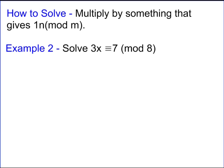So we want to solve these. We want to multiply so that we get 1n mod n. So, I need this over here to be 1 mod 8. So, I think about the coefficient, which is 3, and I think, what do I need to multiply 3 by to get 1 mod 8?